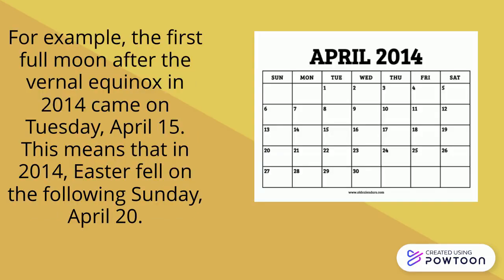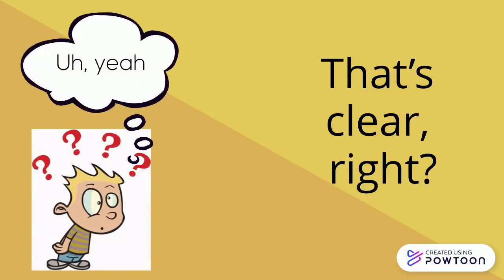For example, the first full moon after the vernal equinox in 2014 came on Tuesday, April 15th. This means that in 2014, Easter fell on the following Sunday, April 20th.